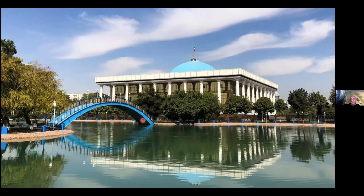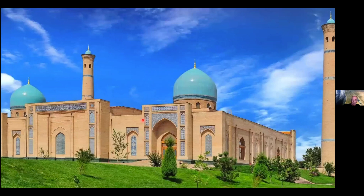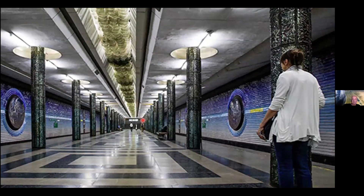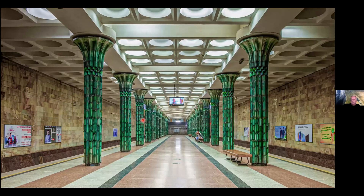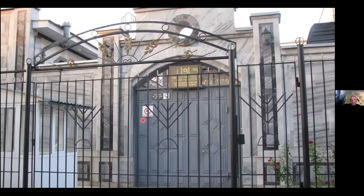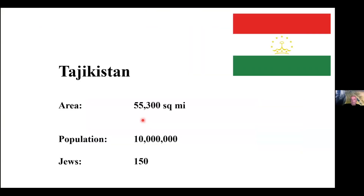Moving to Tashkent, the capital — beyond modern and Muslim architecture, what I love most are the subway stations, more ornate than even Moscow or St. Petersburg, richly decorated with beautiful glass, ceramic tiles, and light fixtures. We also visit Tajikistan — essentially similar in population to Samarkand. The official language of Uzbekistan is Turkic, while in Tajikistan they speak a language closer to Persian. Very small Jewish population but worth mentioning.